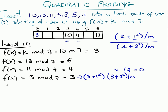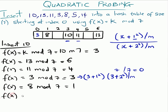For the next one, 8 mod 7 is 1, so we keep 8 at position 1. Next we have 5, and we keep 5 at its hashed position.